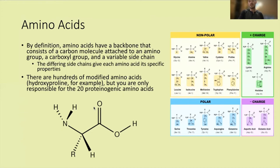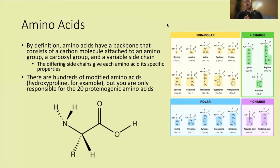In reality there are hundreds of amino acids — your body can modify them for different purposes, like hydroxyproline — but you're only responsible for the 20 proteinogenic amino acids. They can be grouped into four categories, though you may also see them sorted by sulfur-containing groups or ring structures. You need to memorize the name, structure, three-letter code, and one-letter code for all 20 amino acids, and you should know how each side chain interacts with others.